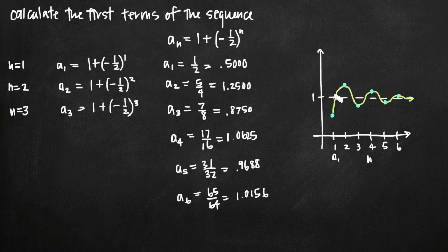And what you see is that these values oscillate back and forth across the line y equals 1, but they get closer and closer to that line.